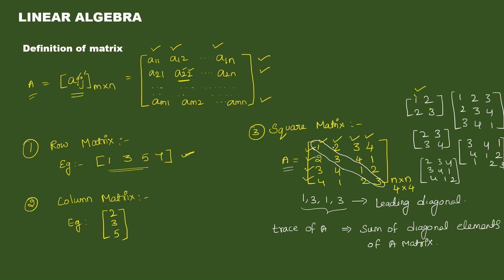Similarly, checking another submatrix: elements 1, 3, 1, 3 — diagonal elements match the main diagonal, so this is also a principal submatrix. But a submatrix with diagonal elements 2 and 4 — these are not diagonal elements of A — so this is not a principal submatrix. A submatrix with diagonal elements 1, 3 would qualify as principal submatrix.